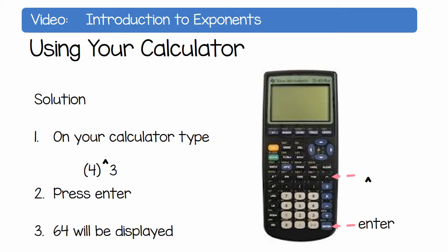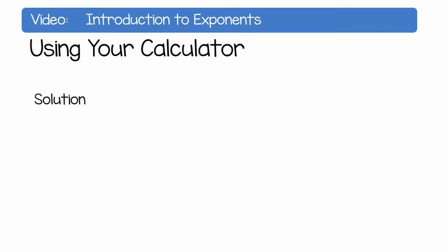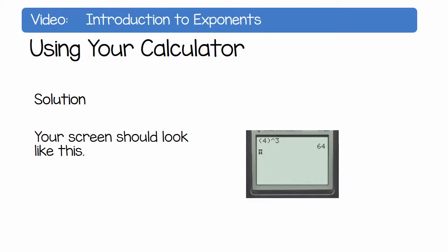The answer 64 will be displayed. Your screen should look like this: 4 to the exponent 3. When you press enter, you will get the value 64.